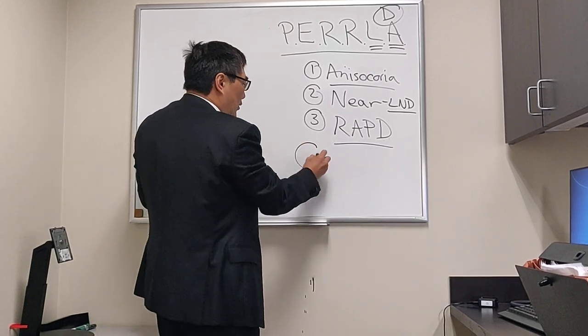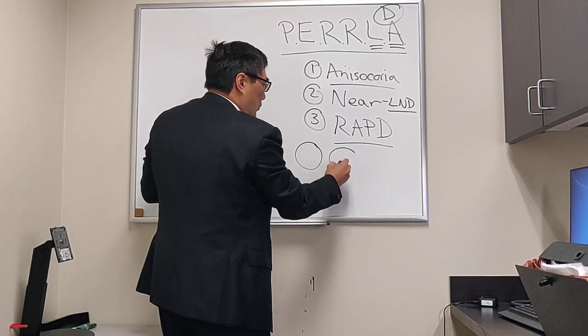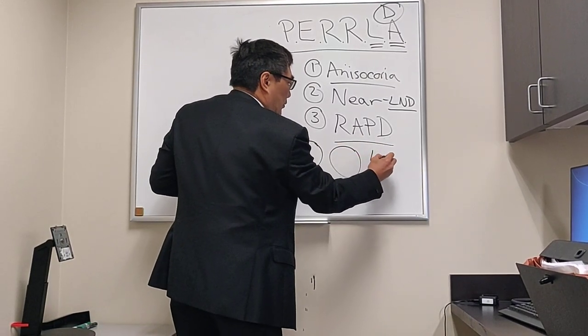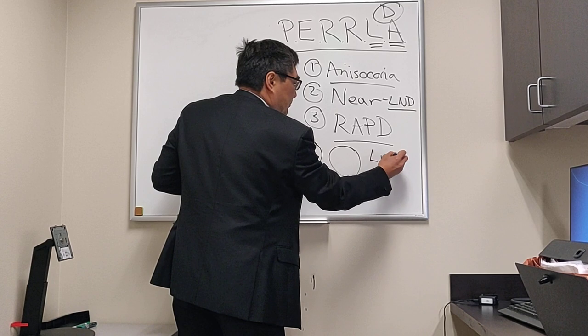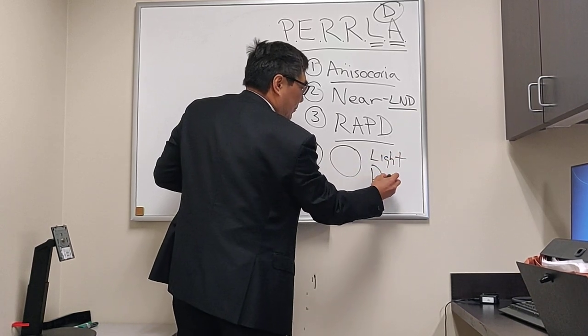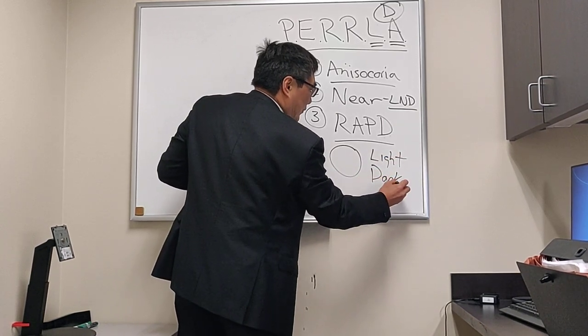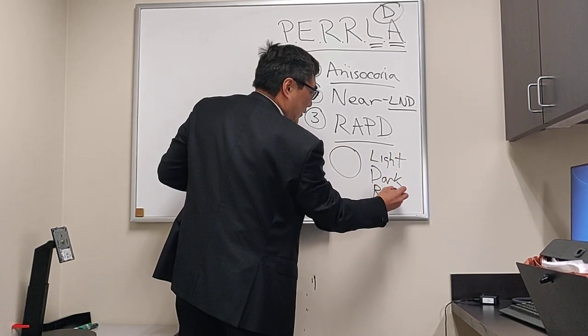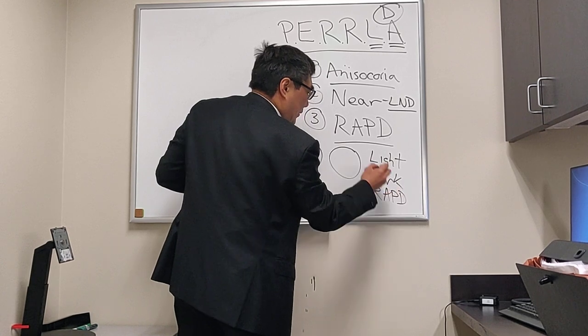When we're looking at pupils, we need to test both in the light and in the dark. And then we have to swing the flashlight to test for a relative afferent pupillary effect.